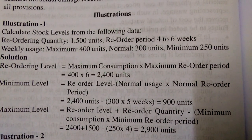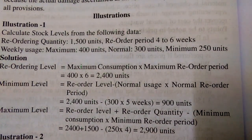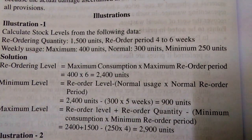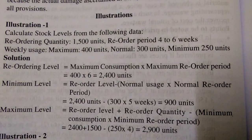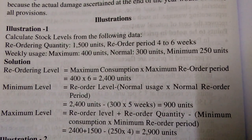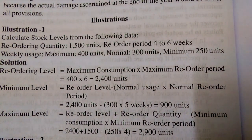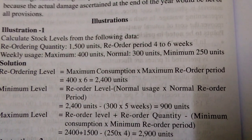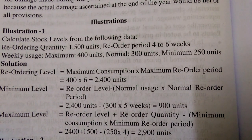Weekly usage: maximum 400 units, normal 300 units, minimum 250 units. From this data, reordering level equals maximum consumption multiplied by maximum reorder period, that equals 400 units into 6 weeks.